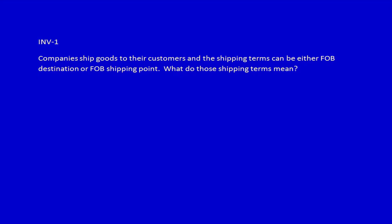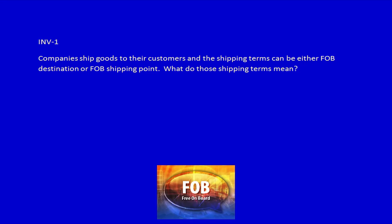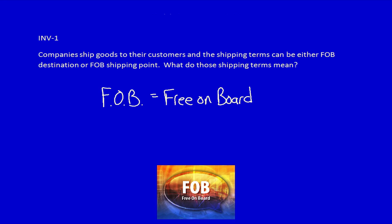We're going to discuss inventory, but in order to start that discussion we really have to understand how goods are shipped. That's why we're starting with question INV-1. Companies ship goods to their customers and the shipping terms can be either FOB destination or FOB shipping point. FOB means free on board, and that is in relationship to the receiver. It indicates how long the product has been in transit before it starts being charged to the receiver.